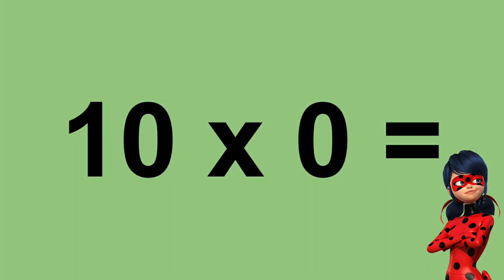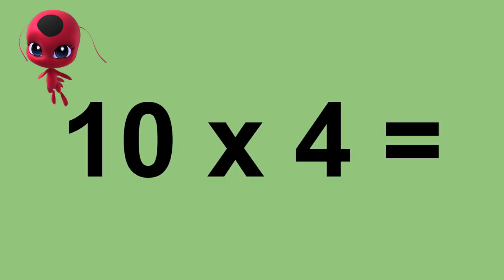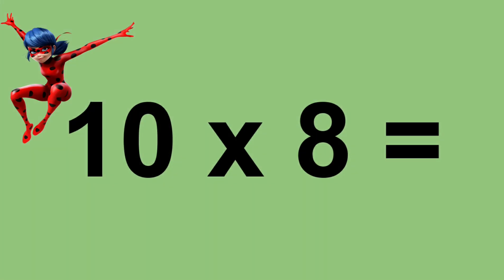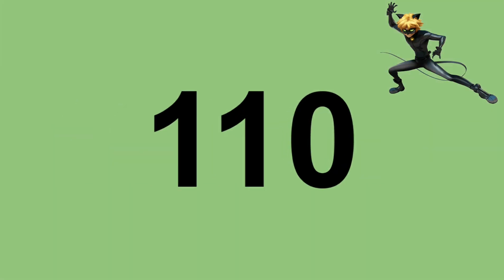Ten times zero equals zero. Ten times one equals ten. Ten times two equals twenty. Ten times three equals thirty. Ten times four equals forty. Ten times five equals fifty. Ten times six equals sixty. Ten times seven equals seventy. Ten times eight equals eighty. Ten times nine equals ninety. Ten times ten equals one hundred. Ten times eleven equals one hundred and ten. Ten times twelve equals one hundred and twenty.